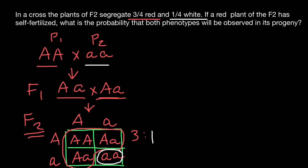Now let's return to our problem. If a red plant from the F2 generation has self-fertilized, what is the probability that both phenotypes will be observed in its progeny? That means we have to exclude the white variant — we now only work with this sample space, excluding the white phenotype ratio. We are now working with frequencies of genotypes, not phenotypes, because we work with one phenotype. The ratio of genotypes is going to be one homozygous dominant to two heterozygous.